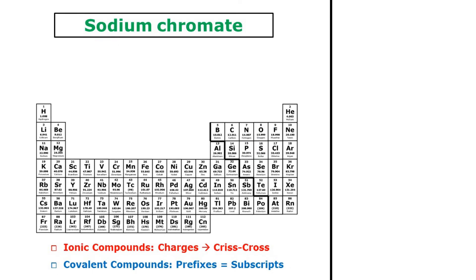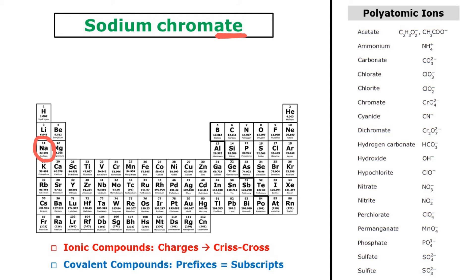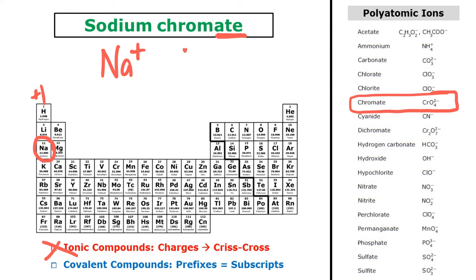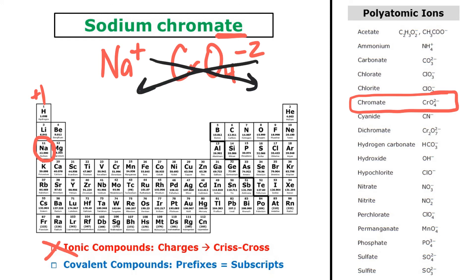Here we have sodium chromate. Sodium is a metal, and the -ate ending tells me I'm looking at a polyatomic ion — chromate is a polyatomic ion. I've got a metal and a polyatomic ion, so this is clearly an ionic compound. I'll find their charges and then crisscross. Sodium is in group 1, so it has a +1 charge. I'll get chromate's formula and charge off of my polyatomic ion list. After crisscrossing, I get Na2CrO4 — that is the formula for sodium chromate.